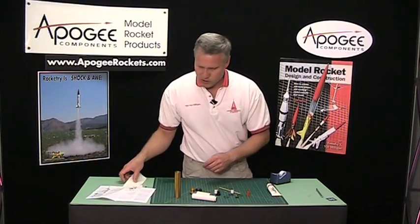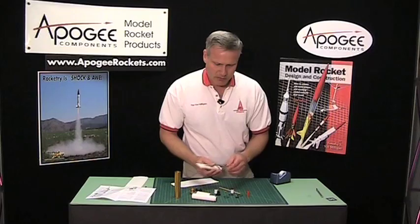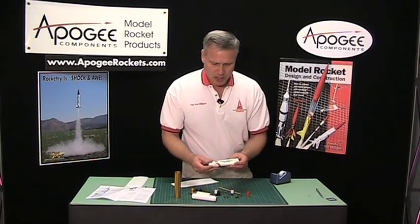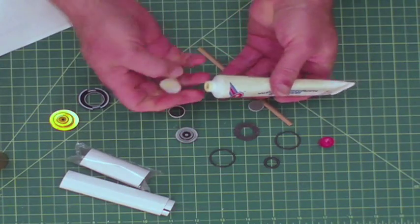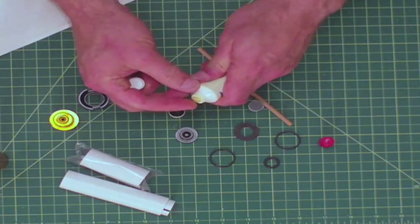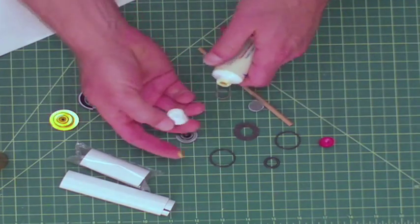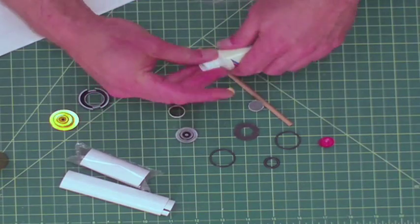First step is to grease the o-rings. They can be greased with pretty much anything. I use white lithium grease. Aerotech says you can also use Vaseline. White lithium grease can be found at any auto supply store, and you only need a little bit.